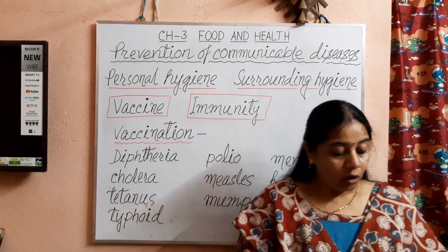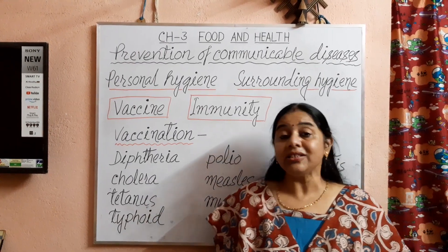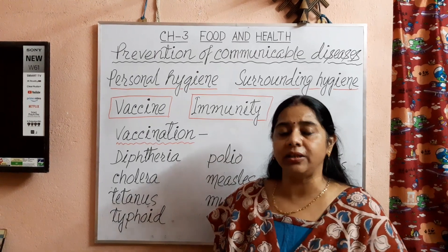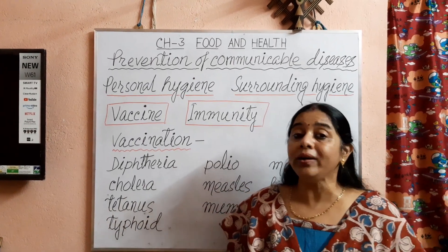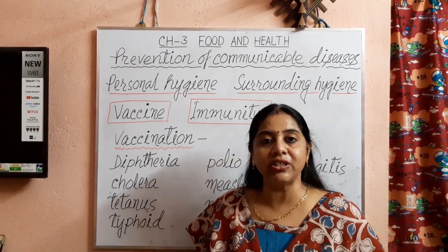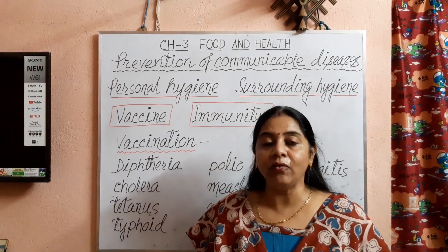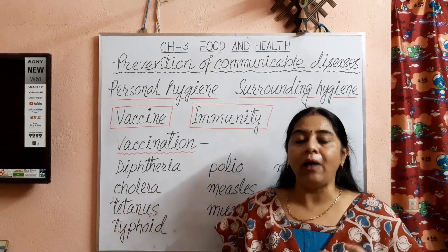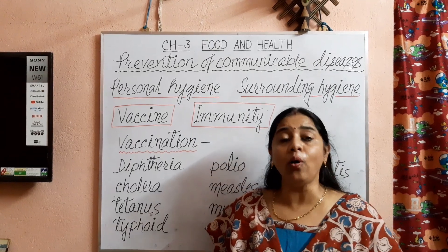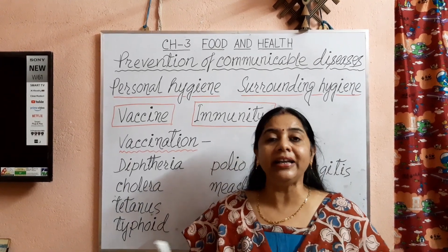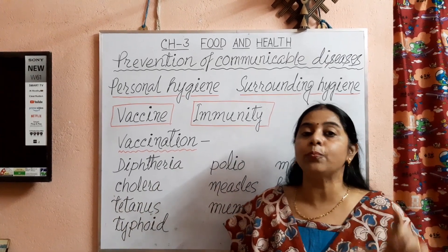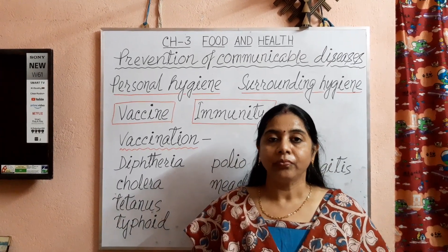Now children, the fourth point is we must keep ourselves away from an infected person — persons who are suffering from chickenpox, measles, COVID-19, or viral fever. We should keep ourselves at a distance from them. All of you are now habituated in maintaining social distancing to prevent the spread of coronavirus.